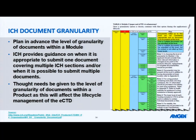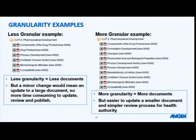According to ICH guidelines, you sometimes decide whether you're going to submit one document or multiple documents in a section. Thought needs to be given to the level of granularity of a document within a product, as this can affect your life-cycling management of the eCTD. For a 3.2.P.2 pharmaceutical development section, on the less granular side there may be about six documents, and on the more granular side there might be nine or twelve. On the less granular side, there are fewer documents, which can seem attractive at first glance — less documents to get reviewed, less to think about. More granularity means more documents, and at first glance that may appear to be a lot more work.